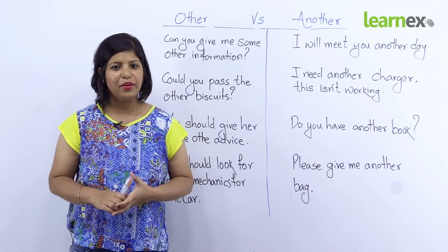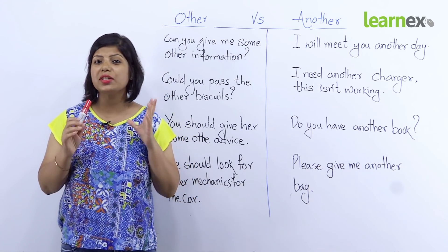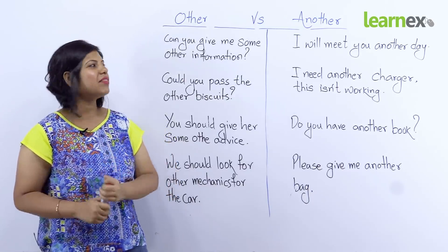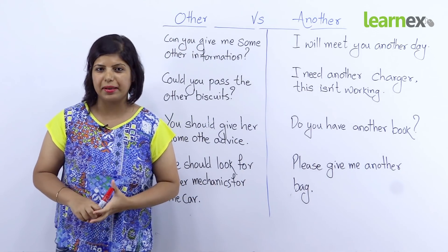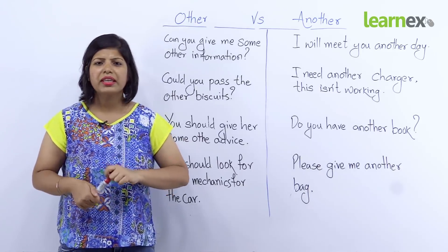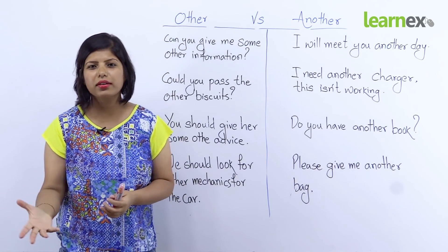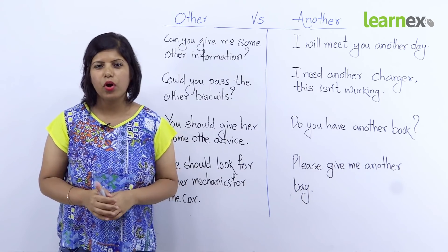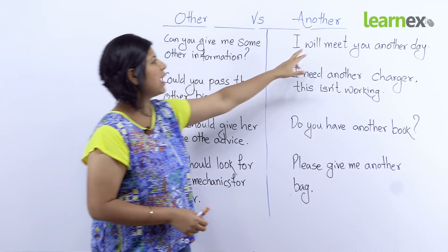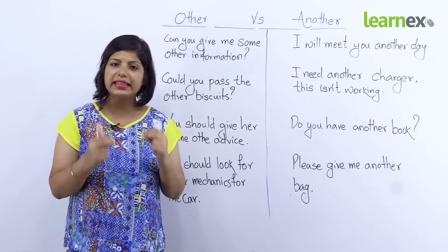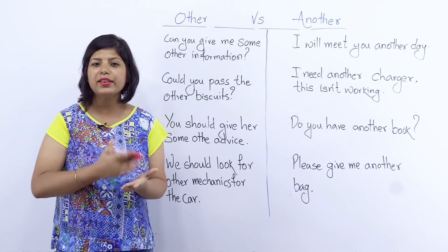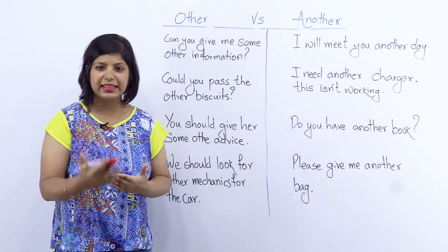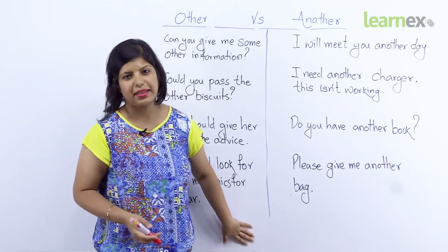Hi friends, I am your friend Sonia. And what do you want to learn today? Well, today we are learning 'other' and 'another'. What is the difference between these two words? For example, 'Give me the another bag' and 'Give me the another book' — these two sentences are very wrong. Other and another are very small words, but using them in our English sentences and conversation is very important. That's why today we are going to learn exactly what the difference between these two is and how they can be used in sentences.